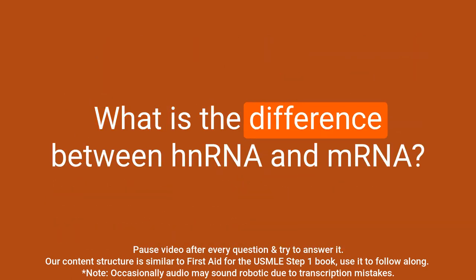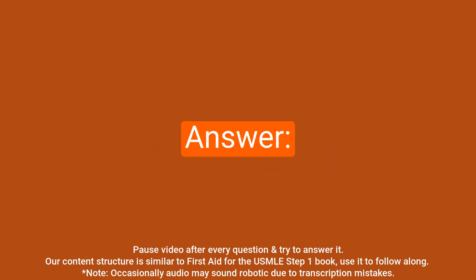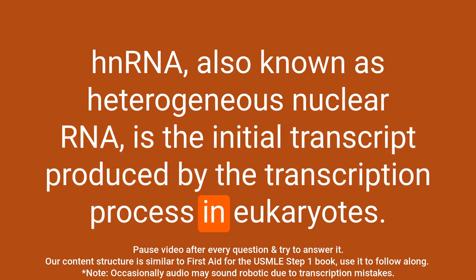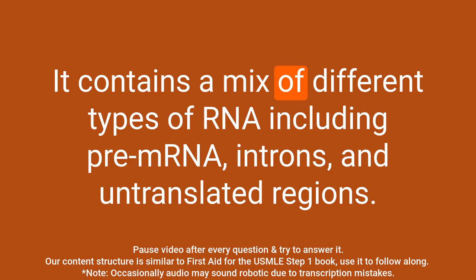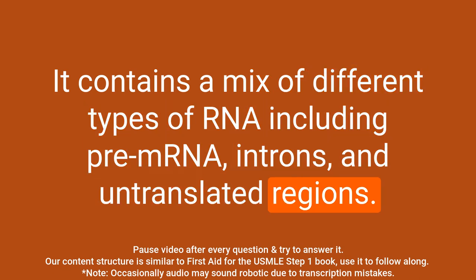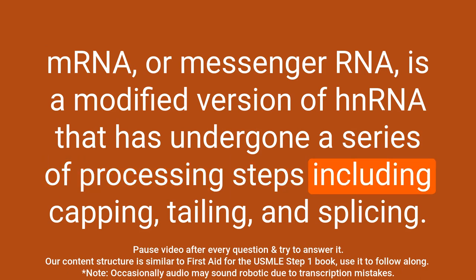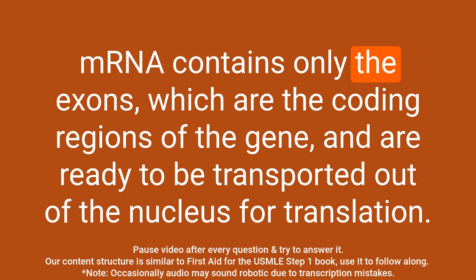Question: What is the difference between hnRNA and mRNA? Answer: hnRNA, also known as heterogeneous nuclear RNA, is the initial transcript produced by transcription in eukaryotes. It contains a mix of different types of RNA including pre-mRNA, introns, and untranslated regions. mRNA, or messenger RNA, is a modified version of hnRNA that has undergone processing steps including capping, tailing, and splicing. mRNA contains only the exons, which are the coding regions of the gene, and is ready to be transported out of the nucleus for translation.